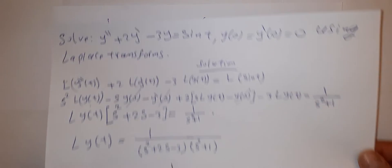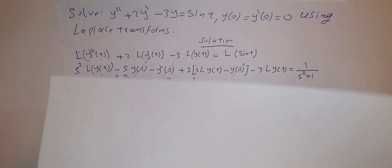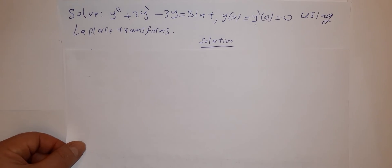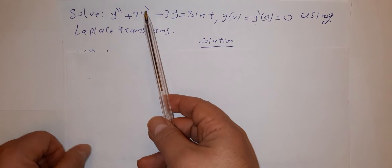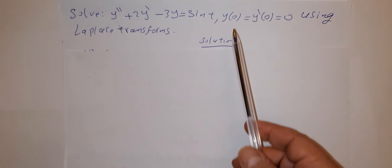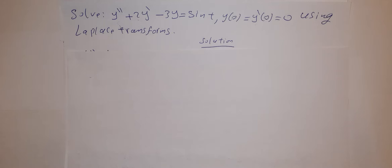Now we have example number one. In example number one, we have to solve y double prime minus 2y prime minus 3y equals sine t, where y of 0 and y prime of 0 equals 0 using Laplace transforms.